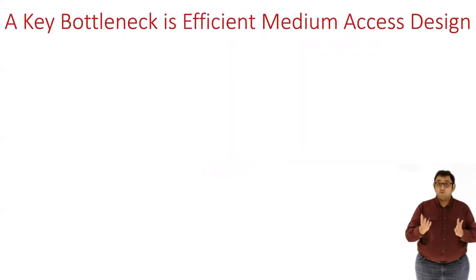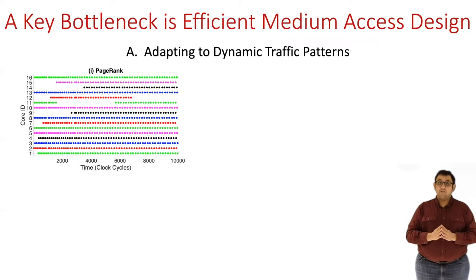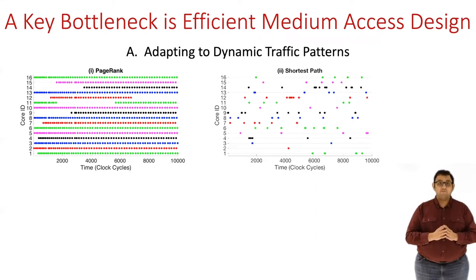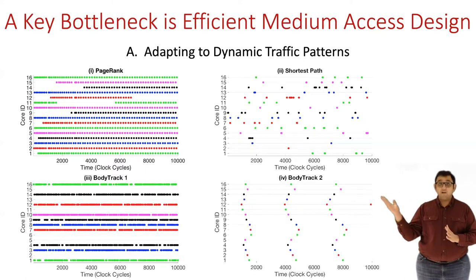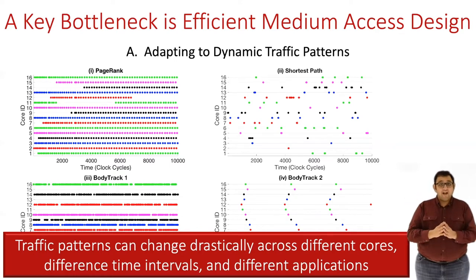The design of medium access protocols for wireless NOCs is particularly challenging for two reasons. First, the traffic patterns on a multicore processor are very dynamic and can change drastically across applications. Some applications have very dense traffic like page rank, whereas others have bursty and sparse traffic like computing the shortest path in a graph. There are also cases where traffic changes significantly within the same application, like body tracker, a vision application for tracking human body pose. So what we need is a MAC protocol that is able to keep up and adapt to such fast variations.